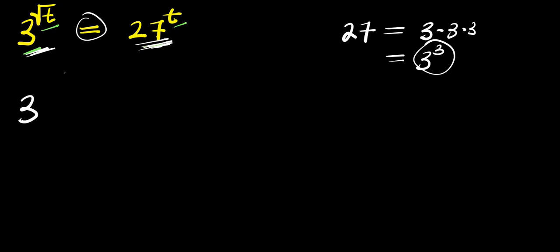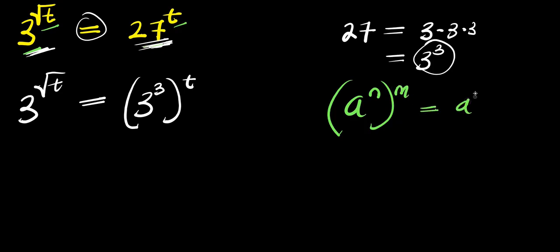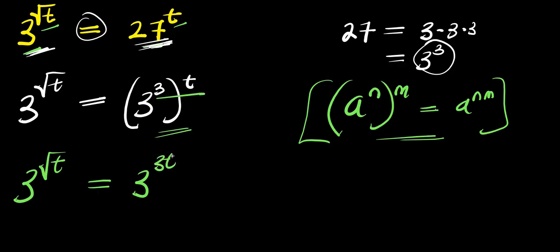So we have 3 to the power of root t equals 27, that is 3 power 3, and this is 3 power of t. Now if you have a to the power of n raised to the power of n, this equals a to the power of n times n. So we can apply this right here — we are going to have 3 to the power of root t equals 3 to the power of 3 times t, that is 3t.